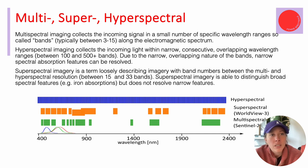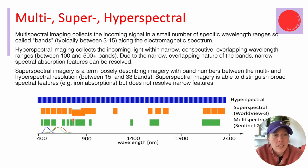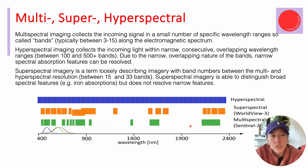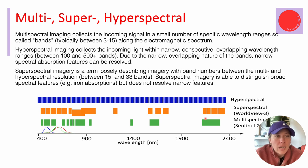Multispectral imaging collects the incoming signal in a smaller number of bands. You can see that for the Sentinel-2 Copernicus satellite — a multispectral satellite — it collects around nine different bands in the visible-to-near infrared up to 1,000 nm, with gaps due to atmospheric windows. Then we have a couple of channels in the shortwave infrared between 1,000 and 2,500 nanometers. Whereas hyperspectral tries to collect all of this information in continuous, narrow, consecutive, overlapping wavelengths.